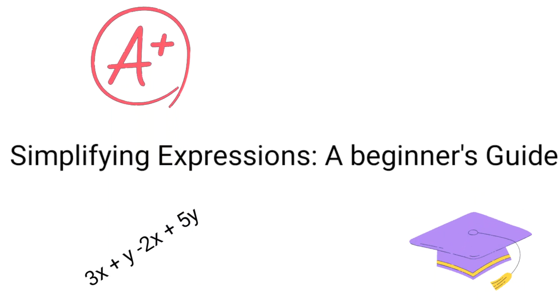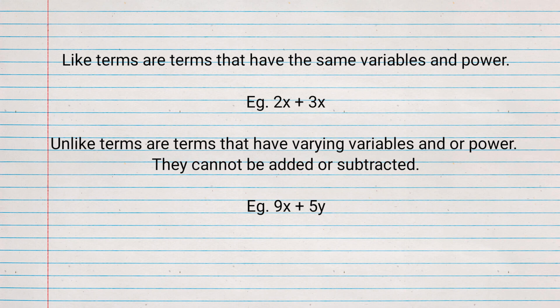Today we are going to simplify algebraic expressions. We will begin by defining like terms. Like terms are terms that have the same variables and power. Example: 2x + 3x.